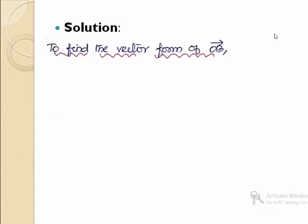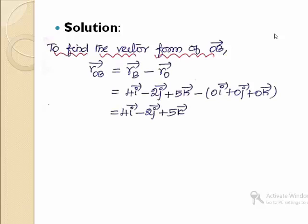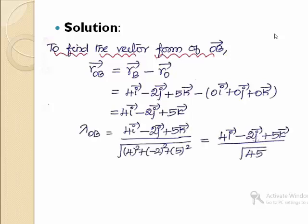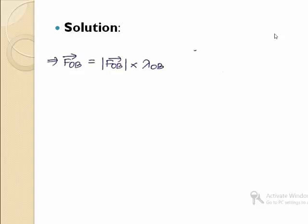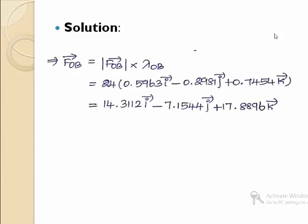To find the vector form of OB, we first calculate the position vector along OB: 4i - 2j + 5k. Then we calculate the unit vector along OB using the position vector divided by its magnitude, simplifying to 0.5963i - 0.2981j + 0.7454k. The force FOB equals the magnitude of OB times its unit vector, giving 14.312i - 7.1544j + 17.8896k.